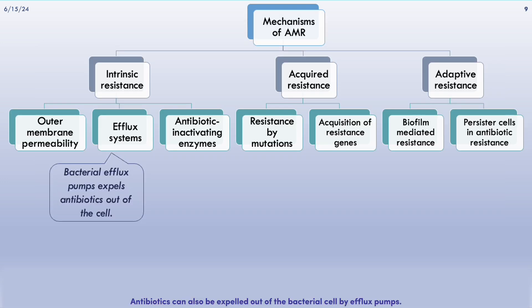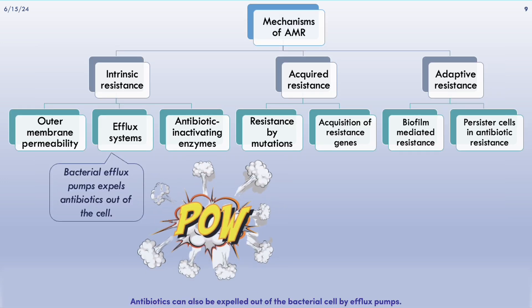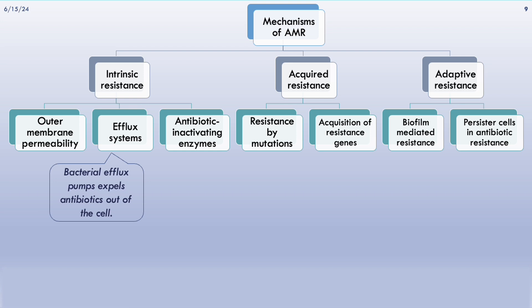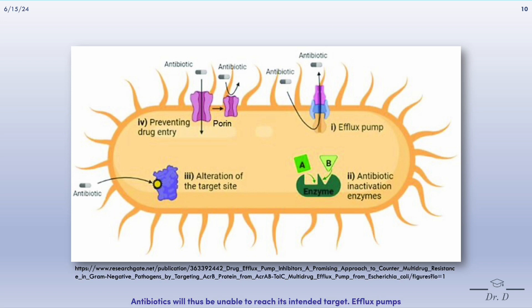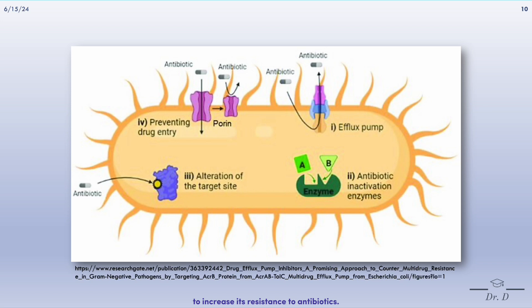Antibiotics can also be expelled out of the bacterial cell via efflux pumps. Efflux pumps work by transporting antibiotics out of the bacterial cell, resulting in a low intracellular concentration of antibiotics. Antibiotics will thus be unable to reach their intended target. Efflux pumps often work with other resistance mechanisms like beta-lactamases to increase resistance to antibiotics.